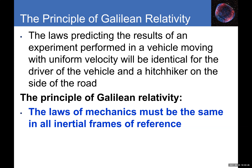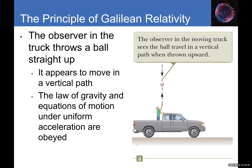The principle of Galilean relativity states that the laws of mechanics must be the same in all inertial frames of reference. Newton's laws of motion are the same in all inertial reference frames. For example, an observer in a moving truck: if the truck moves at constant velocity and someone throws a ball straight up, the ball goes straight up and comes back down — exactly as it would in a physics lab.